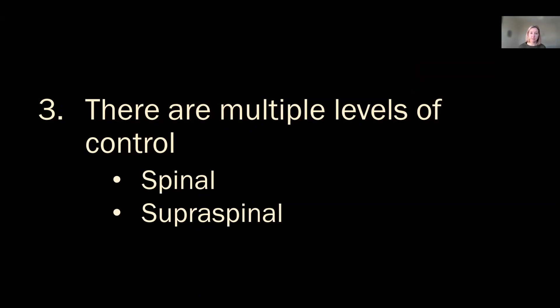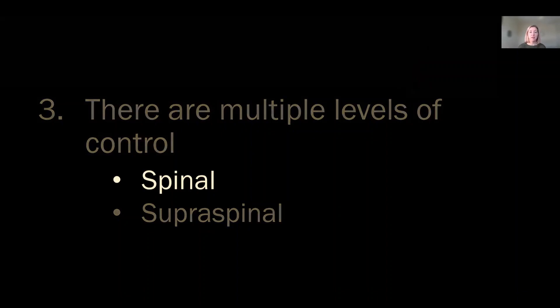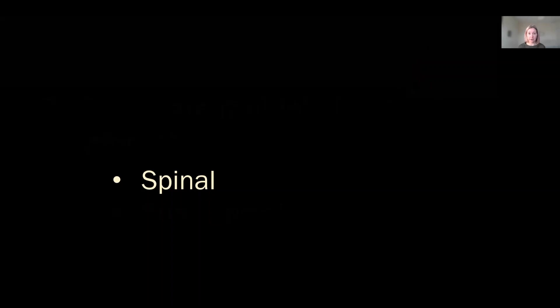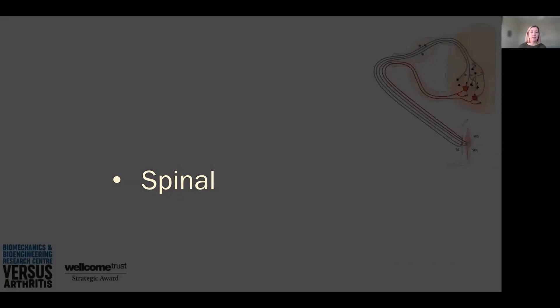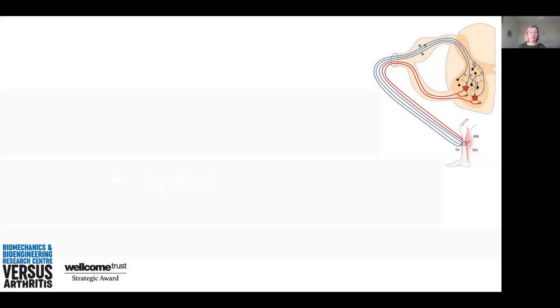So there are multiple levels of control — spinal and supraspinal. Supraspinal means from the brain essentially. So how do we start to study these and unpick exactly what's going on in different movements and conditions? Let's start with the spinal.